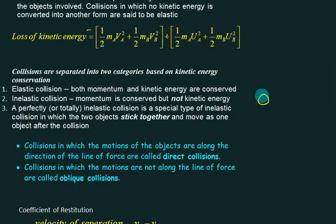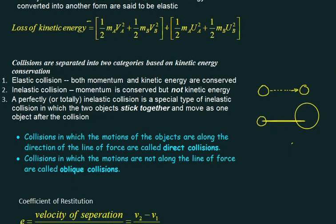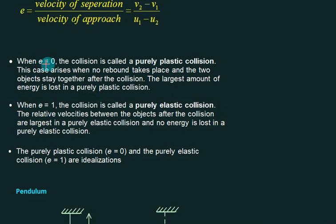If one body strikes exactly at the center of the other, it is called a direct collision. If it strikes off-center, it is called an oblique collision — oblique is not in the syllabus, only direct collision is covered. Remember: when E = 0, it is a perfectly plastic collision. When E = 1, it is a perfectly elastic collision. The general range of E is 0 to 1 — 0 for plastic, 1 for elastic. Thank you.